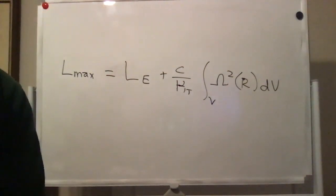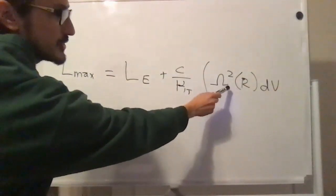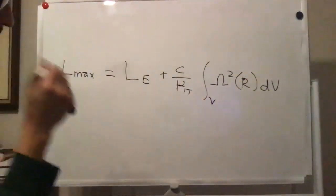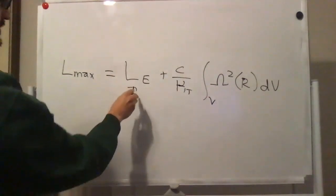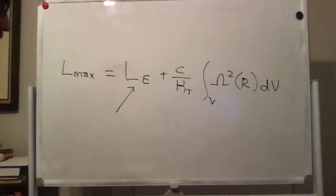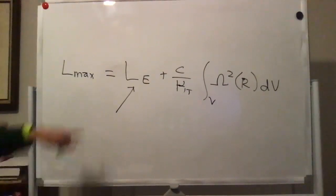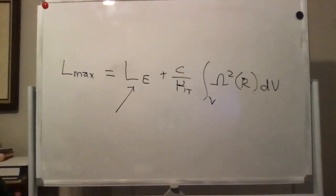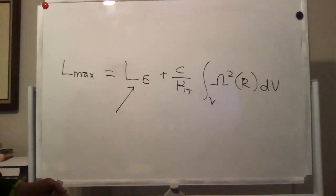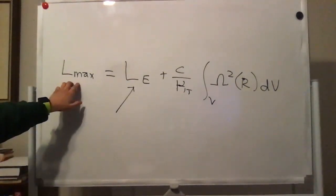L_max will never be infinity because things cannot rotate infinitely fast, but it can get very high. The Eddington luminosity can definitely be calculated for black holes and quasars — it has been done. For a quasar, the actual luminosity is roughly a thousand times the luminosity of the Milky Way — all 200 billion stars combined — though that is probably not close to the theoretical limit.